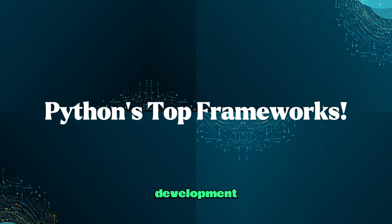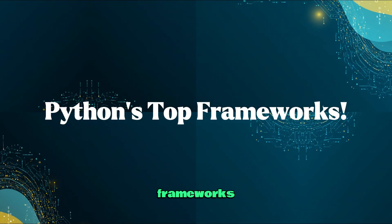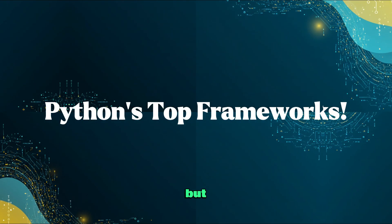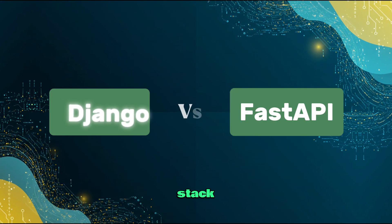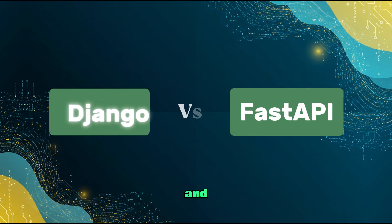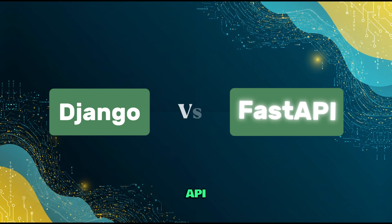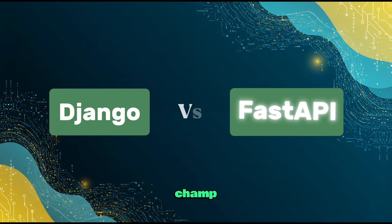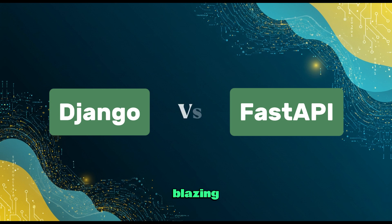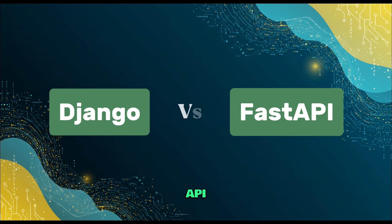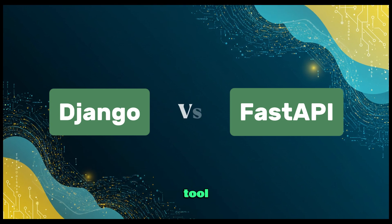Python's web development scene is packed with awesome frameworks, but two stand out: Django, the full-stack giant, and FastAPI, the sleek modern API champ. Whether you're building a full-blown web app or a blazing fast API, choosing the right tool is key.